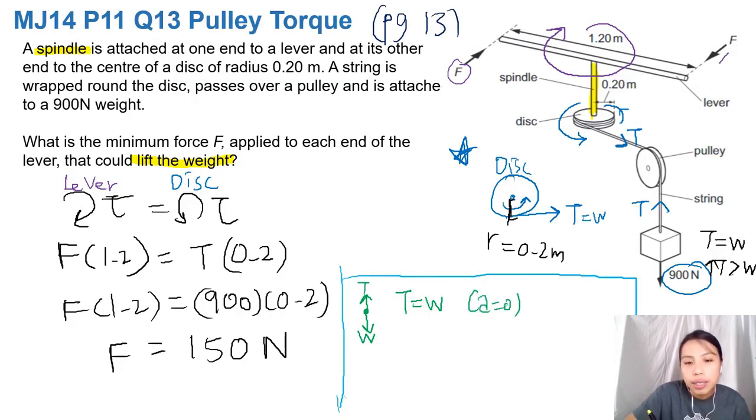If you want to lift the block, your tension has to be stronger than the weight. So tension stronger than weight, then you have some acceleration upwards because the block will move up.